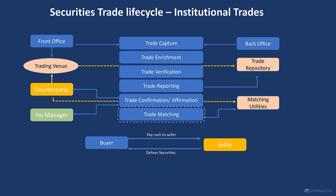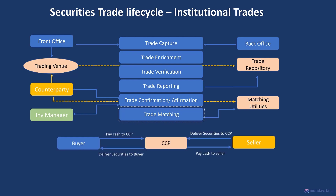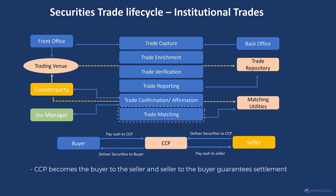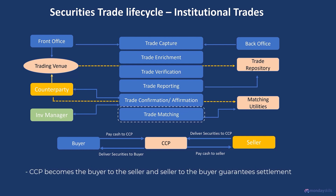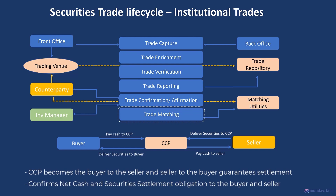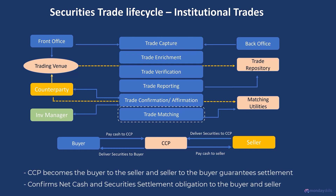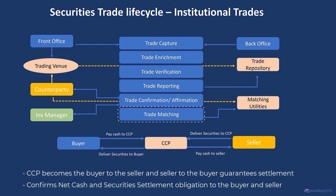Once the trade has been matched, the clearinghouse acting as a central counterparty, or CCP, takes over the transaction. The CCP becomes the buyer to the seller of securities and the seller to the buyer of the securities, and guarantees the trade settlement. The CCP would then communicate the net settlement obligations to the securities firms.